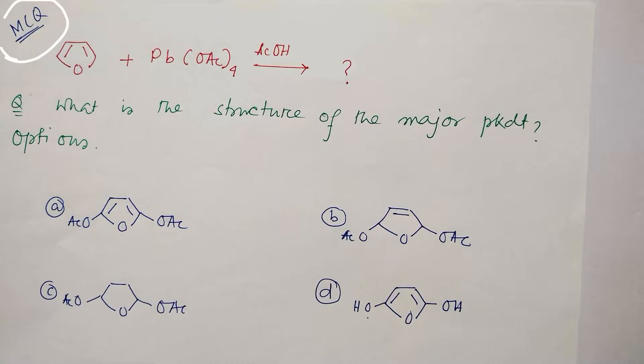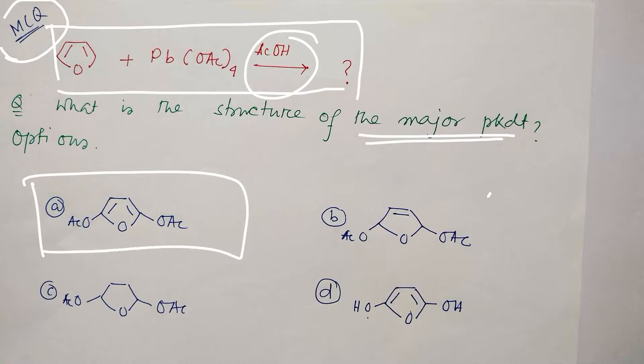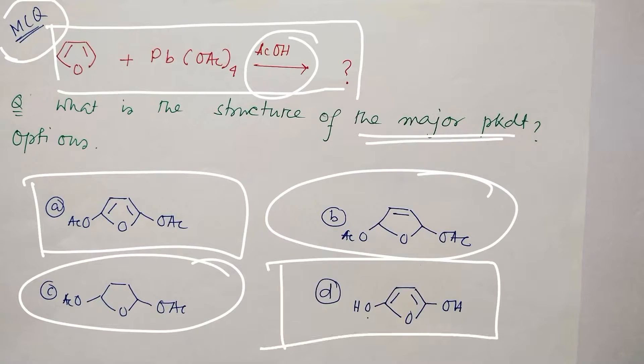Please practice such questions, I guess it may be helpful. The question in front of you is: furan reacting with lead tetraacetate in acetic acid, what is the major product? For that purpose, I have provided four options in front of you. You have to find out what is the right answer here.